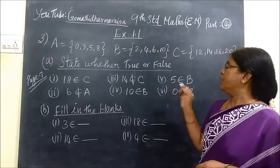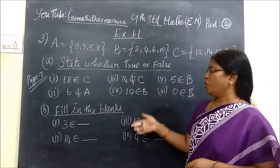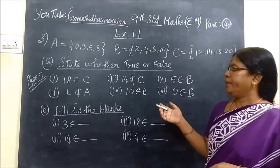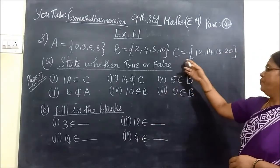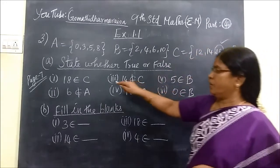Third question: A, B, C, three sets are given. You are writing the coding as true or false and fill in the blank. 18 belongs to C. You see the set C, here 18 is here, so this one is true. Since 18 is the element of the set C, so this is true.